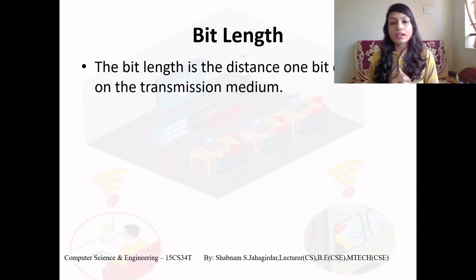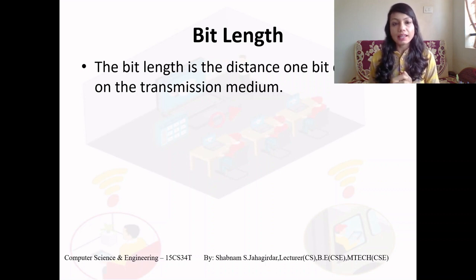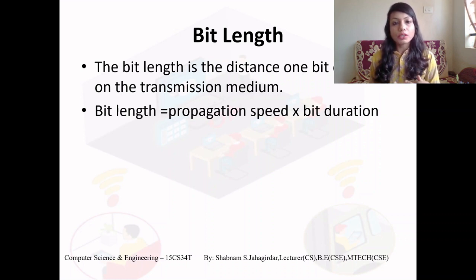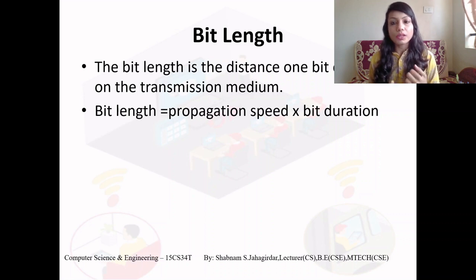Bit length is the distance one bit occupies on a transmission medium — analogous to wavelength for analog signals. The formula is: bit length = bit duration × propagation speed, mirroring the wavelength formula where wavelength = propagation speed × period.